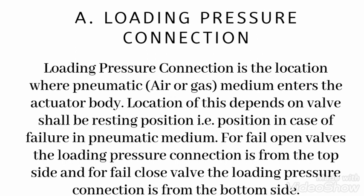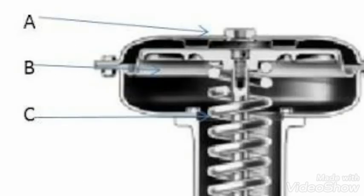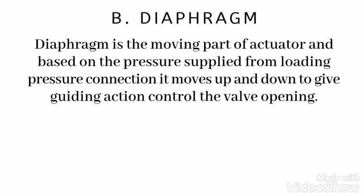The location of the loading pressure connection depends on the valve's resting position in case of failure of the pneumatic medium. For a fail-open valve, the loading pressure connection is from the top. For a fail-closed valve, it is from the bottom side. Here you can see A is the air connection from the top, because this is a fail-open valve — when the air fails, the actuator will open and make the valve open.